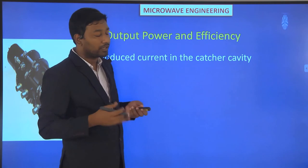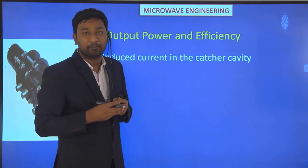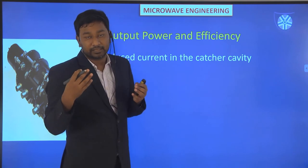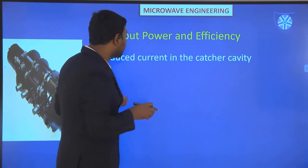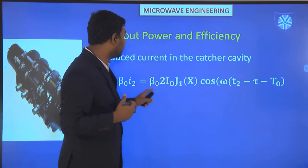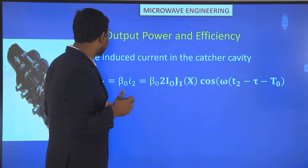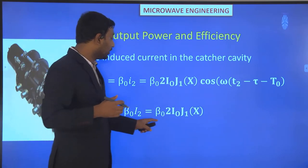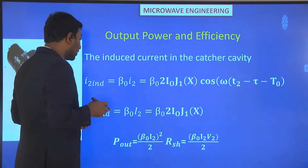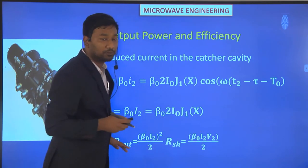Now we will calculate the output power and efficiency of the catcher. The induced current in the two-cavity klystron amplifier catcher cavity is: I2_induced equals β0·I2. Considering n=1, this gives β0 times 2i0·J1(X), with the cosine part equal to 1 for maximum value. The output power is Pout equals (β0·I2)²·R/2, which is the output power from the catcher cavity.